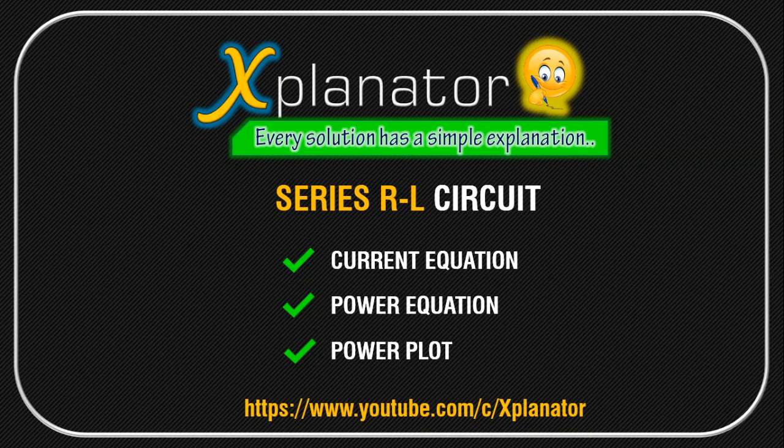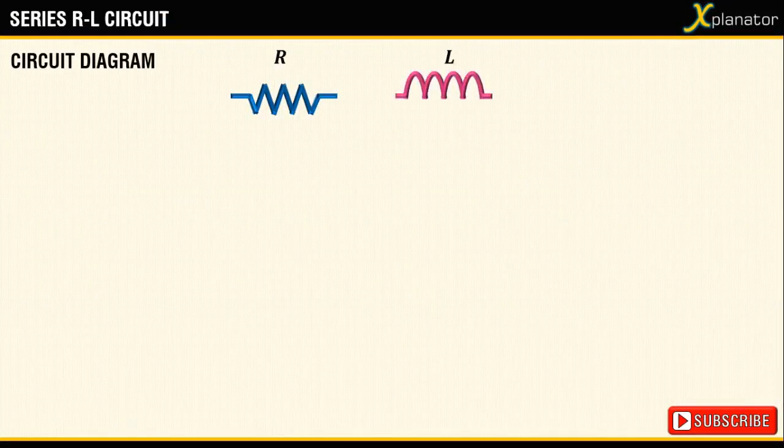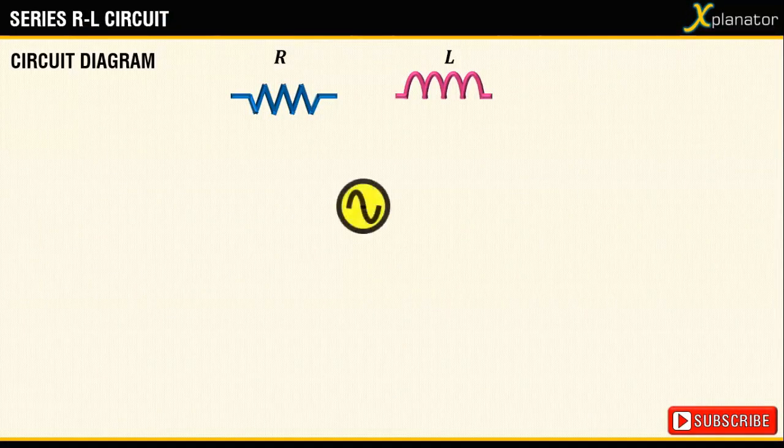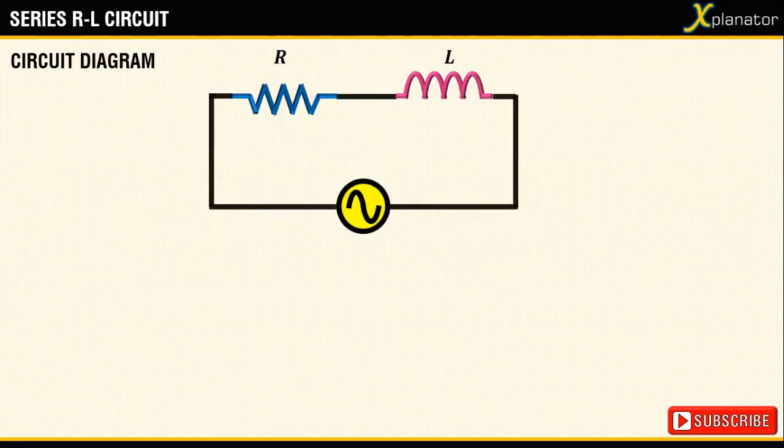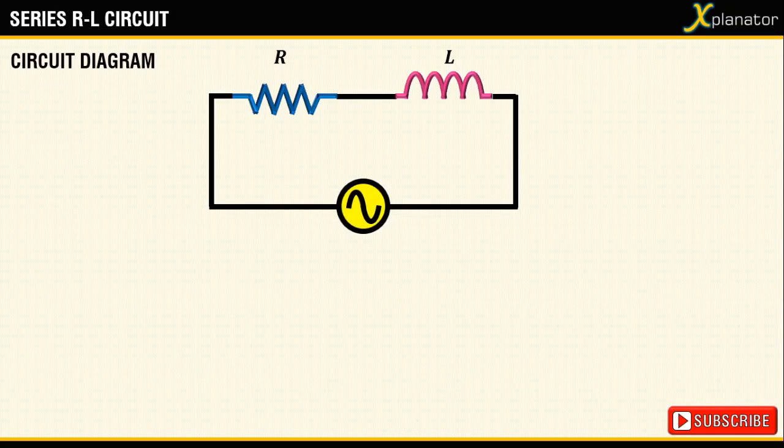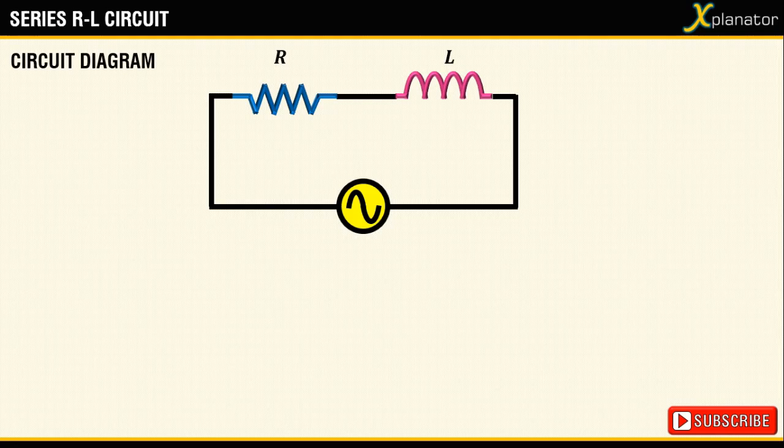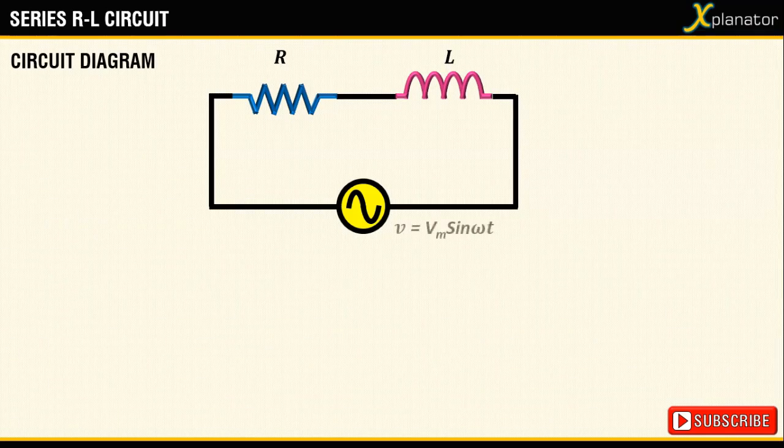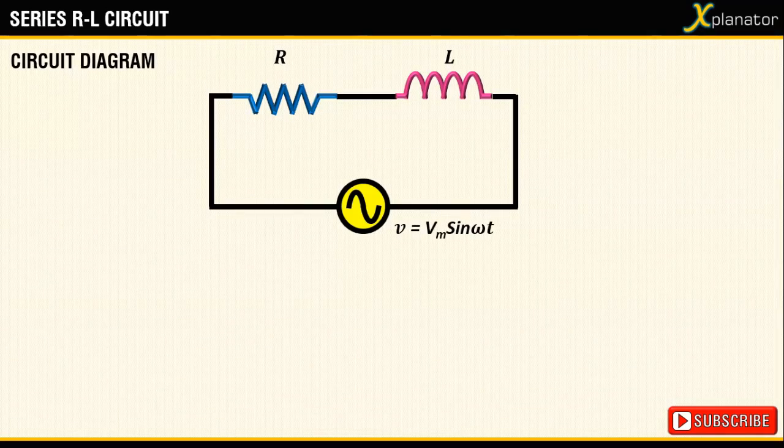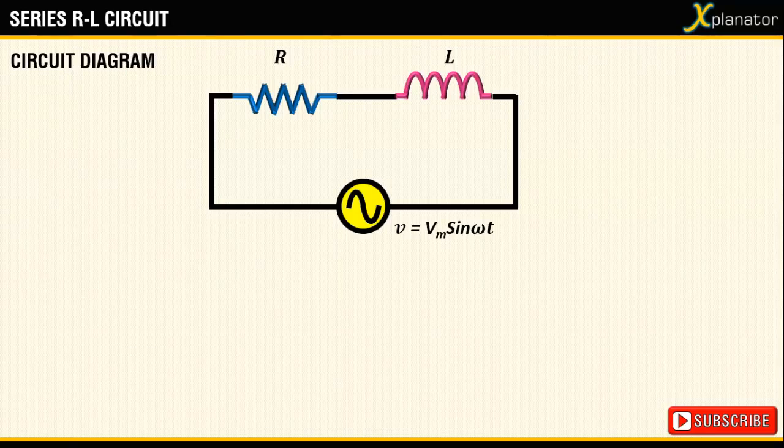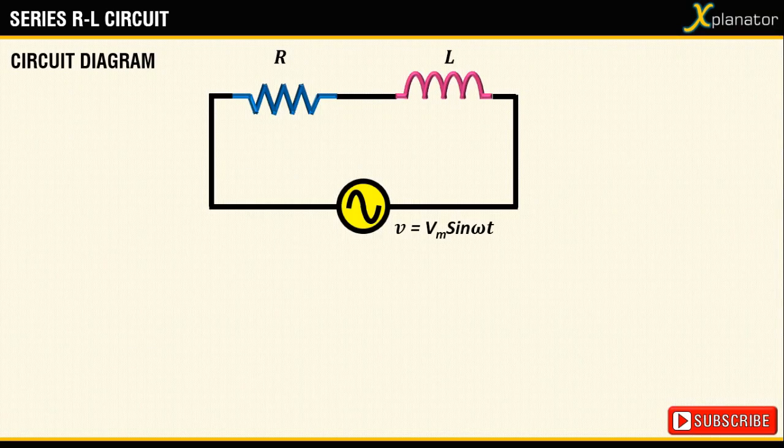To begin with, take a resistor and an inductor, put them in series across an AC supply so that the same current flows through both the elements. The source voltage is given by V equals Vm sin omega t and the AC current flowing is denoted by letter I.